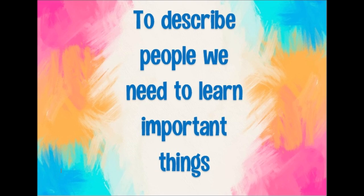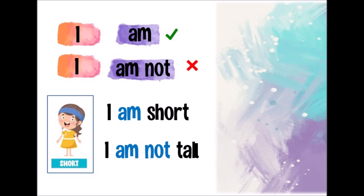Okay, to describe people we need to learn some important things. If we are talking about ourselves, about me, I say I am or I am not. For example, I am short. I am short. So, I am not tall. I am not tall.